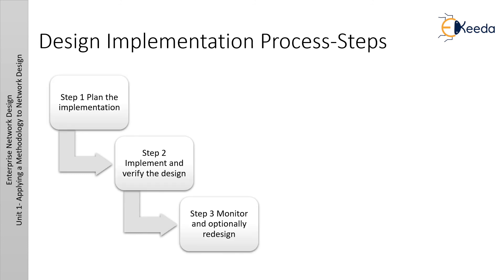Once design is completed, the design implementation process includes planning the implementation, implementing and verifying the design, and monitoring and optionally redesigning. In step one — plan the implementation — the implementation procedures are prepared in advance to expedite and clarify the actual implementation. Cost assessment is also undertaken at this time. This step is performed during the design phase of the PPDIOO model.